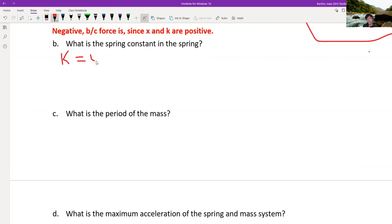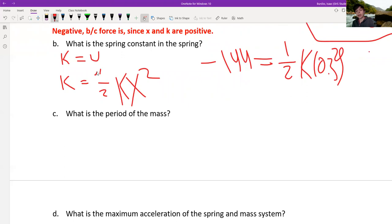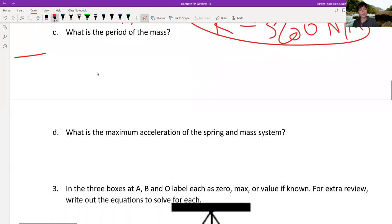Let's try that again. The initial energy is kinetic. The final energy is potential. So the kinetic energy will equal the potential energy, which is one half kx squared. The kinetic energy is this, 144. So k, we're trying to find that. And then 0.3 squared, that's the distance. And when you solve for k, it is 3200. And that's it.